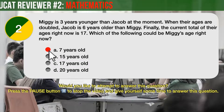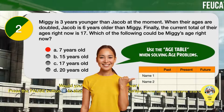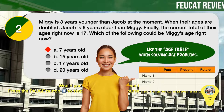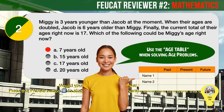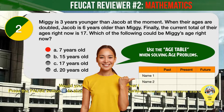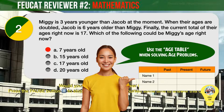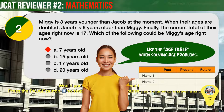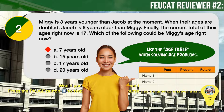The correct answer is A. Miggy is 7 years old right now. For the solution, let's introduce a handy technique when solving age problems: the age table. Using the age table is straightforward and easy. Tabulate with the names of the people as rows, and the known or given points in time — usually the present, some point in the past, and some point in the future — as columns.